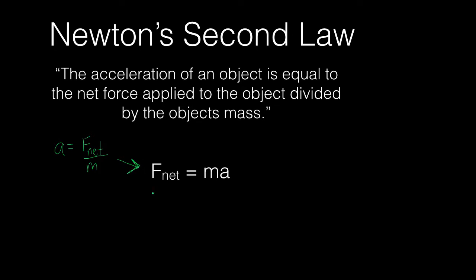It's important to note that in a lot of physics textbooks, you'll see force net written with a sigma sign — sigma F means the same thing as force net. You just add up all the forces and it's the net force acting on that object, and that's equal to Ma. This is maybe the most important and famous equation in all of physics. We're going to use it in the next few problems to solve for any one of these variables: force net, mass, or acceleration.